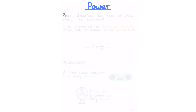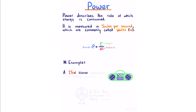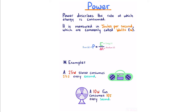Power describes the rate at which energy is consumed; it is measured in joules per second, commonly called watts. Power = energy / duration. For example, a 25-watt stereo consumes 25 joules every second (25 J / 1 s = 25 W), and a 10-watt fan consumes 10 joules every second.